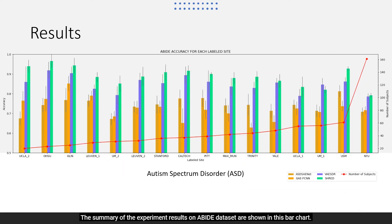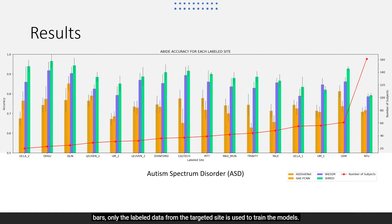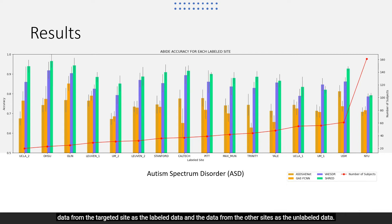The summary of the experiment results on the ABIDE dataset are shown in this bar chart. For the existing methods — ASDS, AENET, and GAEFCNN, shown as the yellow bars — only the labeled data from the targeted site is used to train the models. Whereas for our proposed models, VAESDR in purple and SHRED in green, we train the models using the data from the targeted site as the labeled data and the data from the other sites as the unlabeled data.